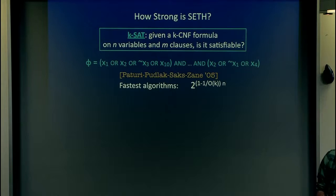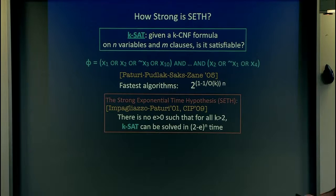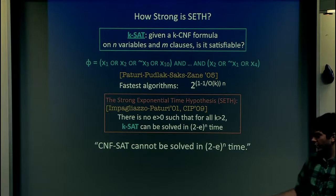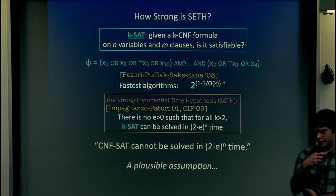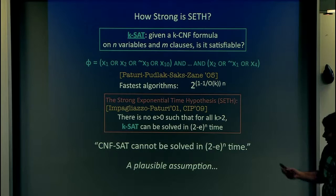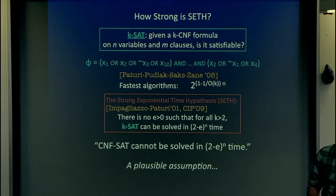Let's go back to the strong ETH and look at this conjecture. It's about KSAT: given a K-CNF formula, asked whether it's satisfiable. For any fixed K, you can do better than 2^n — you can do 1.9^n for small enough K. But as K grows, this becomes 2^n. The strong ETH essentially says there's no epsilon such that for all K, you can solve KSAT in (2 - epsilon)^n. You can think of it as saying CNF SAT cannot be solved in (2 - epsilon)^n. It's plausible because SAT is one of the most famous and studied problems in computer science, so if there were faster algorithms, we'd expect to have found them.